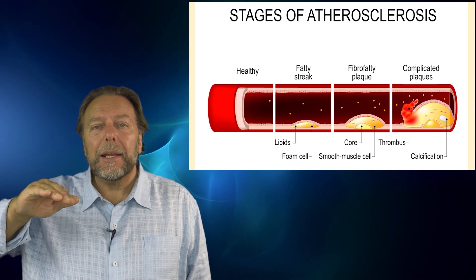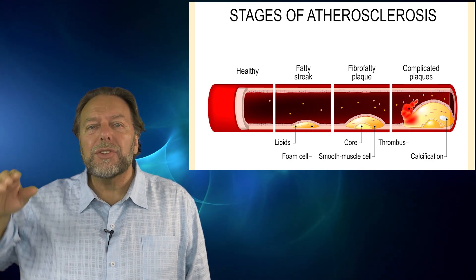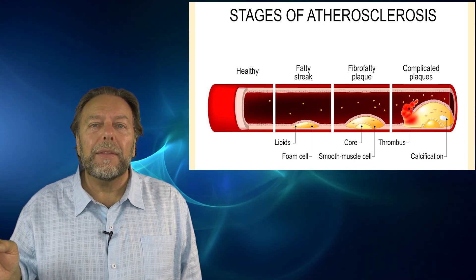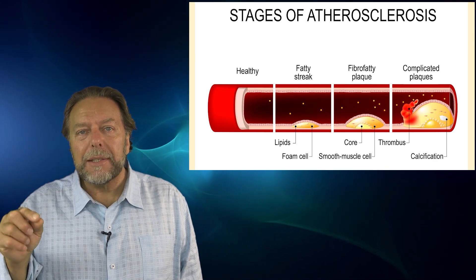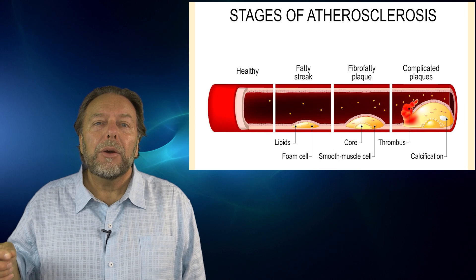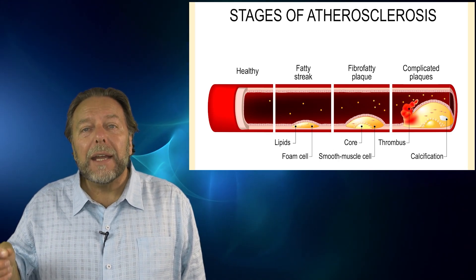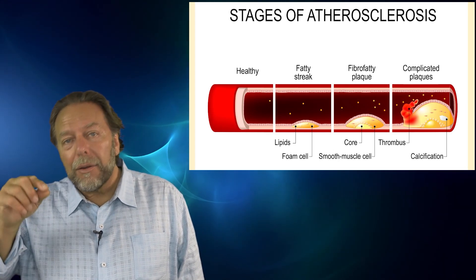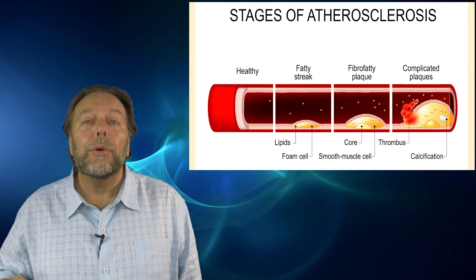A complicated plaque can cause stenosis and decreased blood flow. That decreased flow creates turbulence, which can form a thrombus or blood clot. That clot can then travel and damage structures further down the flow of blood. Those are the three stages of atherosclerosis: a fatty layer underneath the endothelium, a fatty fibrous layer as a more advanced stage, and a complicated plaque.